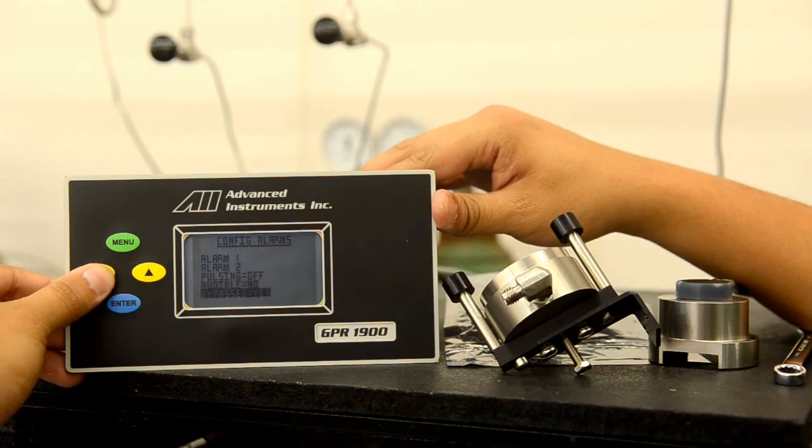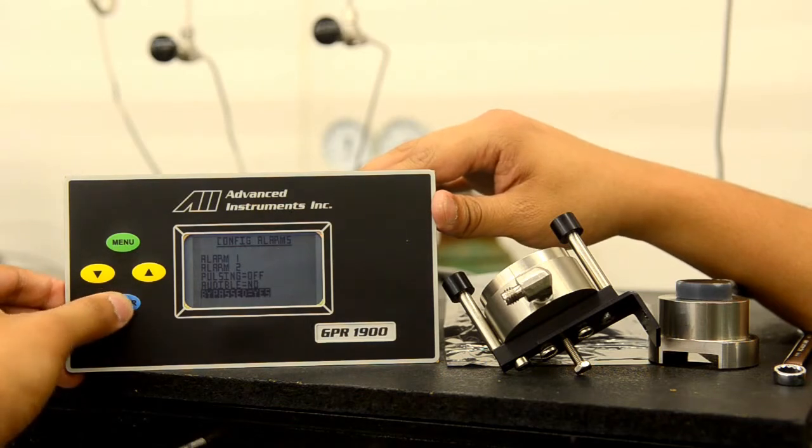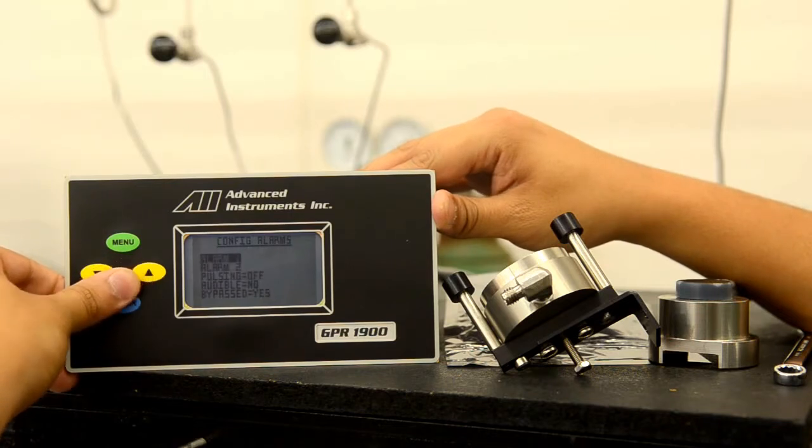We also have a bypass option. If we want both alarm one and two to be bypassed, we can hit yes on that. No to allow both alarms to be enabled. Again, this is done by selecting enter.